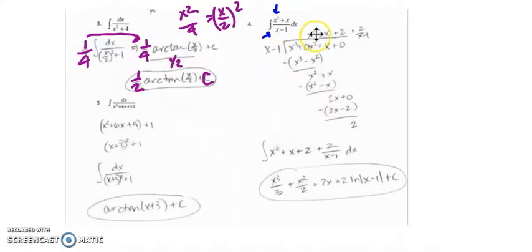x goes into x cubed x squared times. Then multiply. x squared times x is x cubed. x squared times negative 1 is negative x squared. Make sure that you put parentheses around this because we're subtracting them off, and we want to distribute that negative sign. So x cubed minus x cubed is 0.